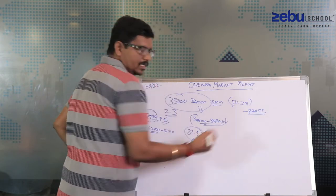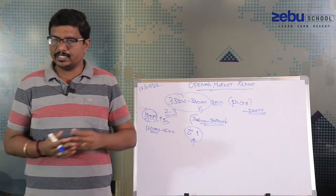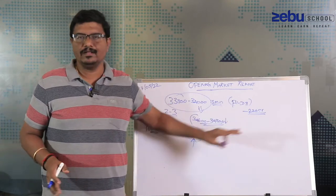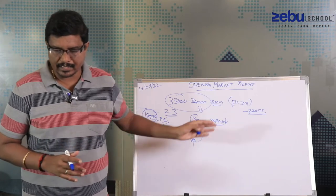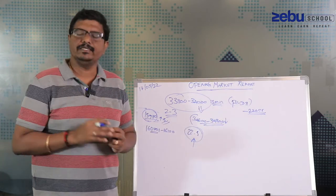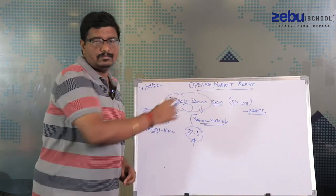Looking at yesterday's price action and FII versus DII, the net was an outflow of somewhere around 220 crore. But looking at the quantum of selling from FIIs over the last 20 days, this seems like the selling has slightly reduced.